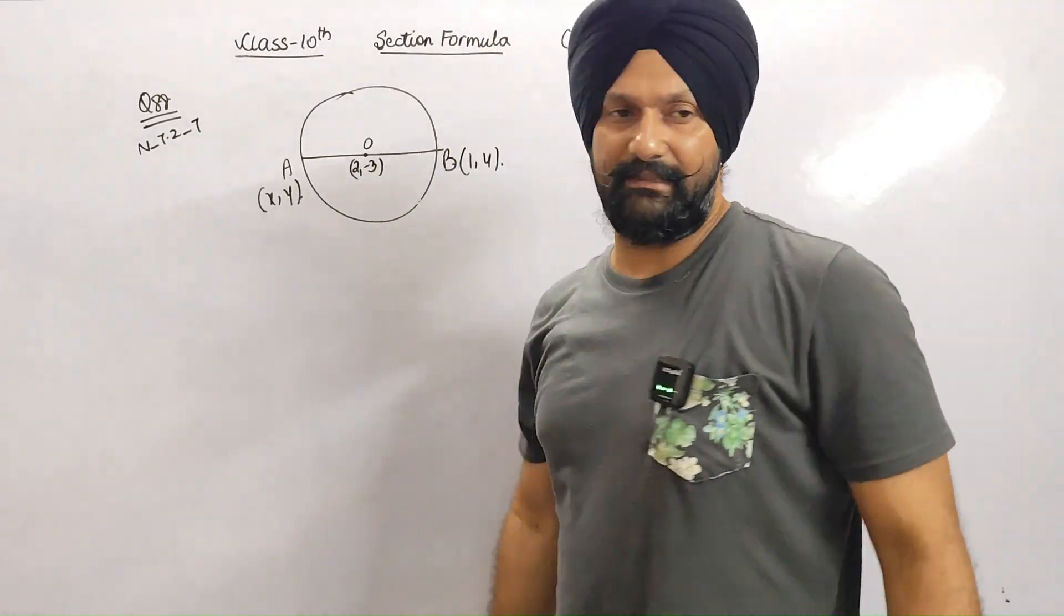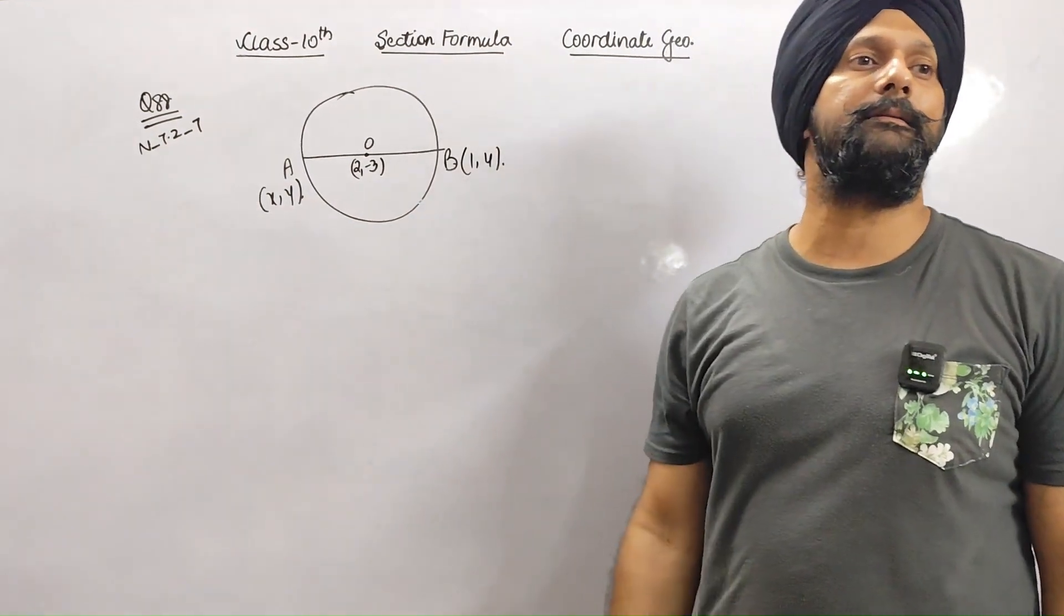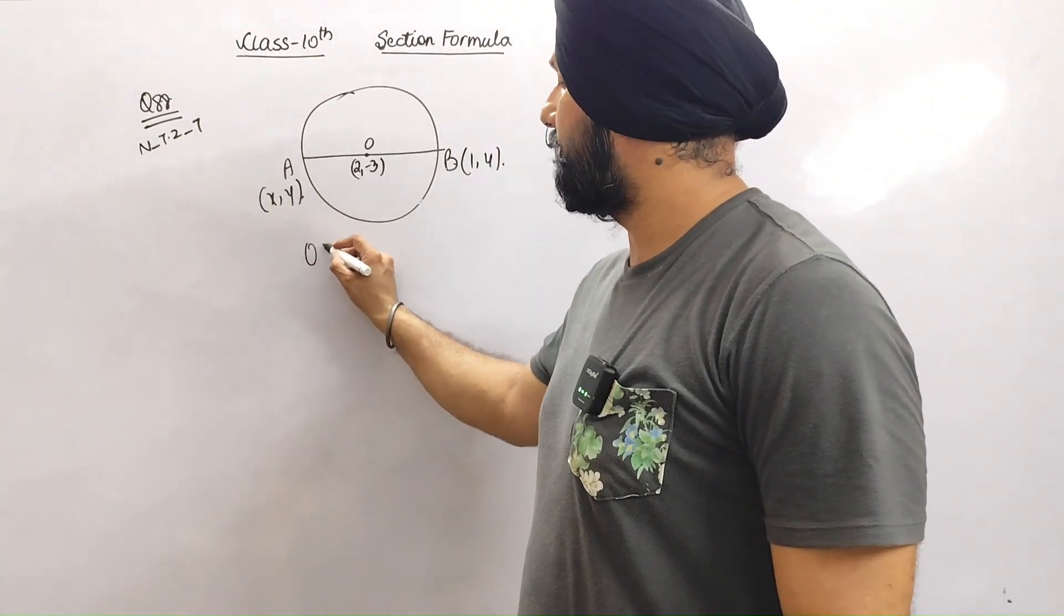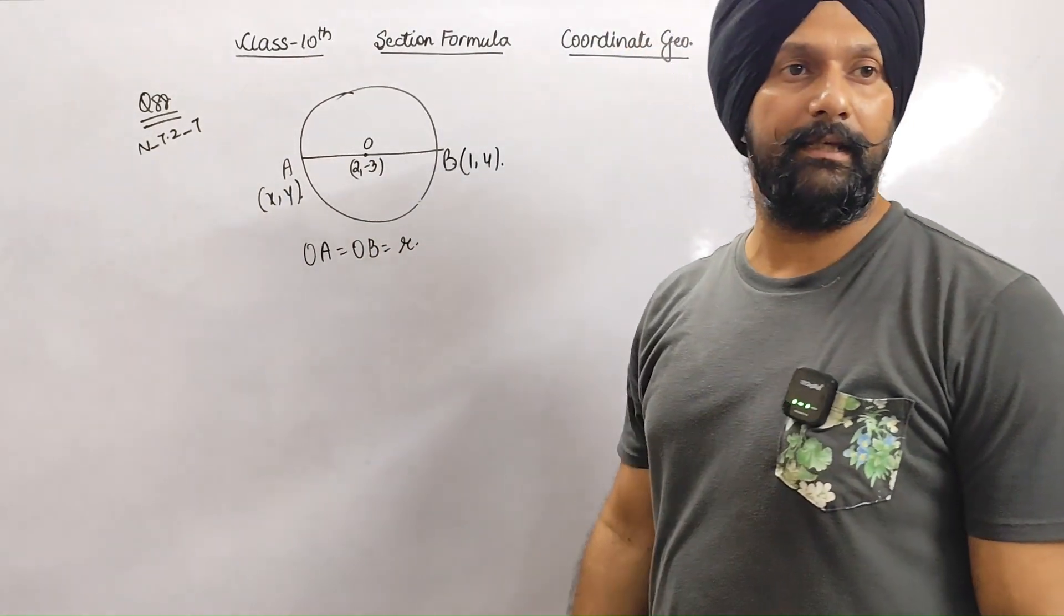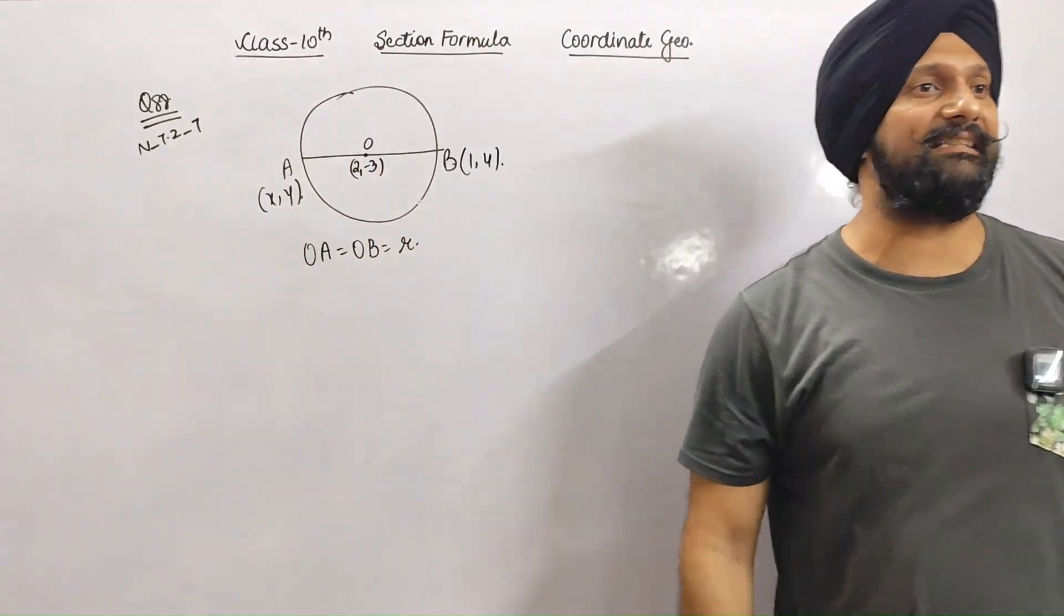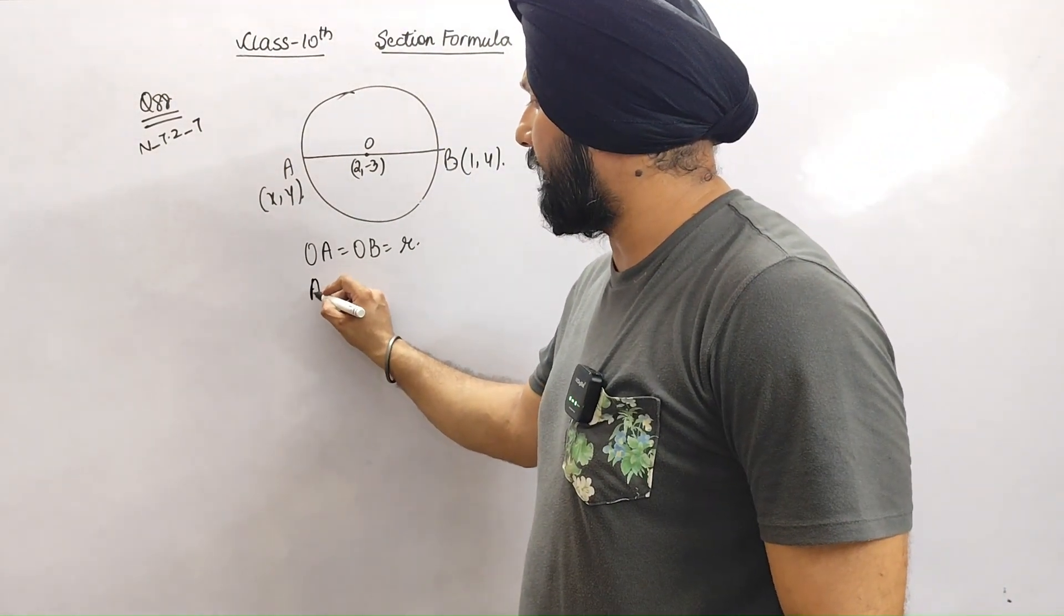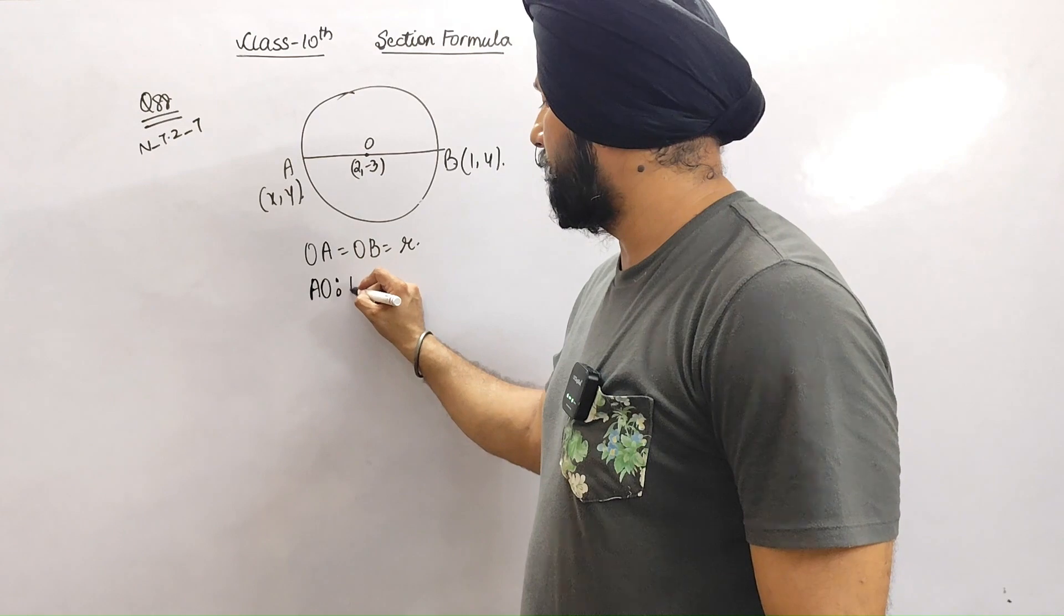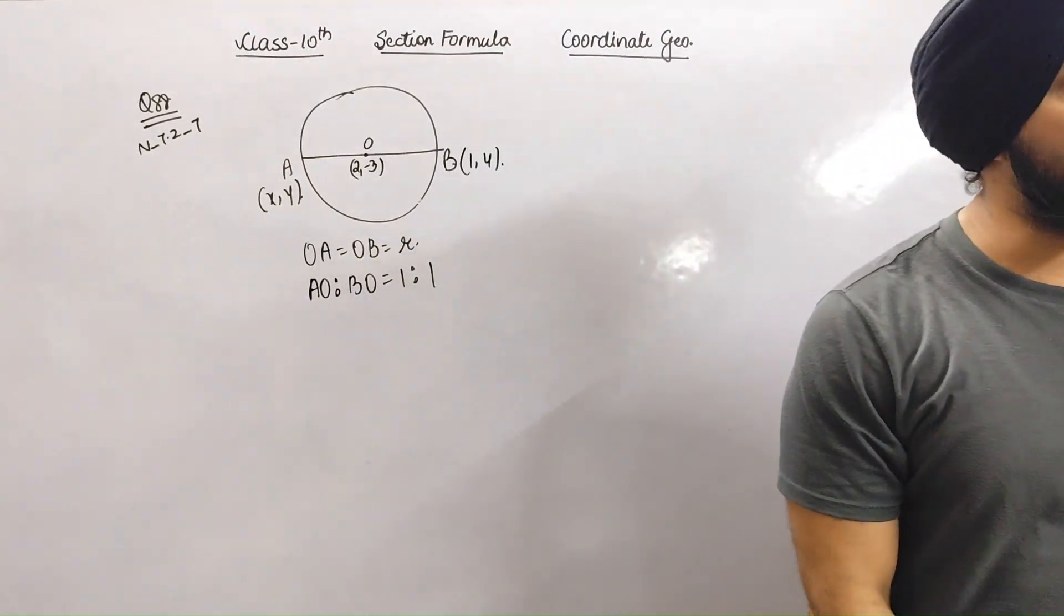Notice that OA is equal to OB. Why is it? So O is acting as a midpoint of AB. This means O to A to O to B ratio is 1:1. Yes or no? Do you agree?